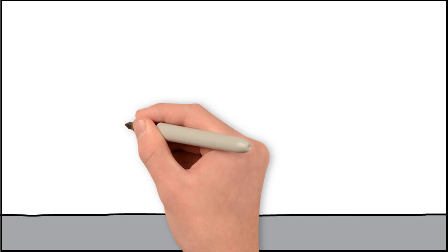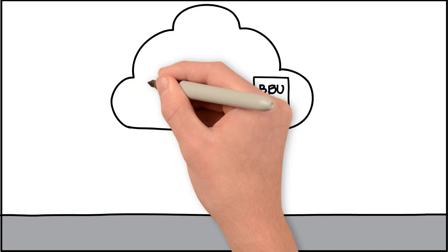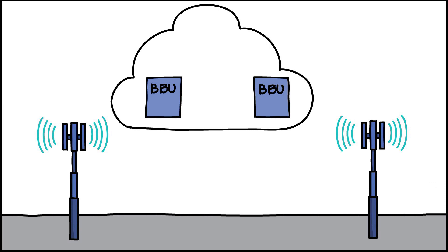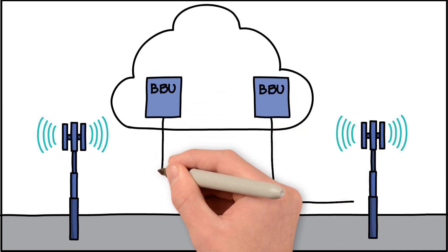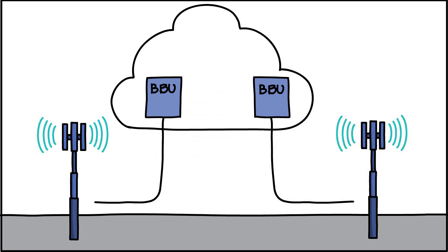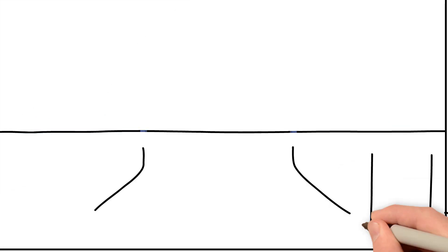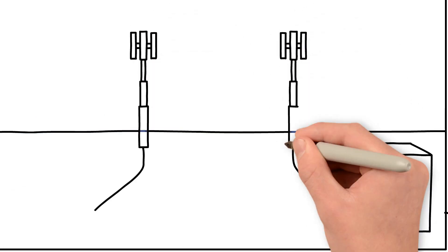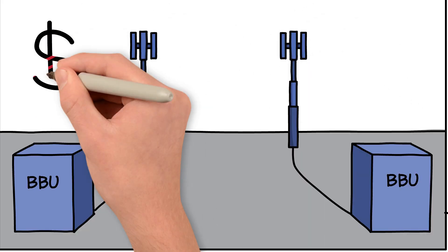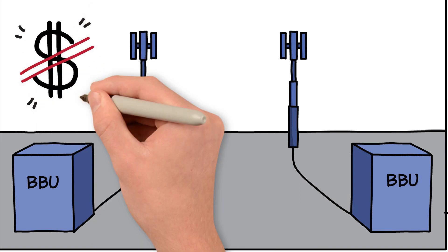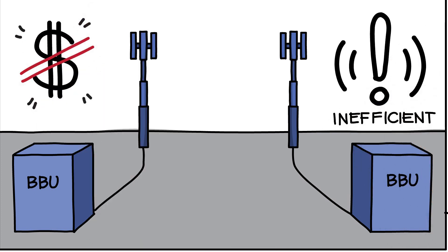There are different levels of C-RAN implementations. The simplest one congregates the BBUs in a central location, but keeps the dedicated connections between BBUs and base stations intact. In other words, it maintains a one BBU to one base station relationship. This topology is similar to a typical D-RAN installation. It offers savings in BBU maintenance, but still lacks efficiency.